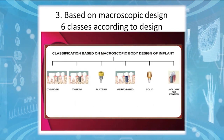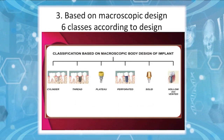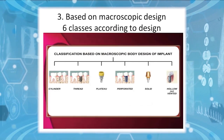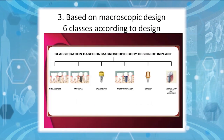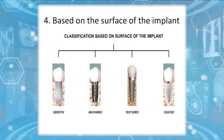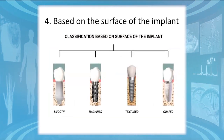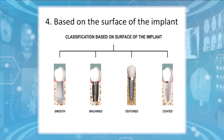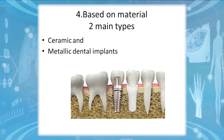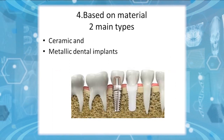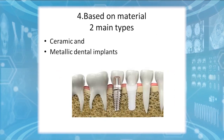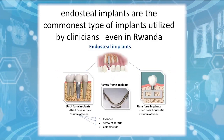Based on macroscopic design, we have six classes: cylindrical implants, threaded implants, plateau implants, perforated implants, solid implants, and hollow or vented implants. Based on the surface of the implant, we have four types: smooth implants, machined implants, textured implants, and coated implants. Based on material, we have ceramic and metal dental implants.